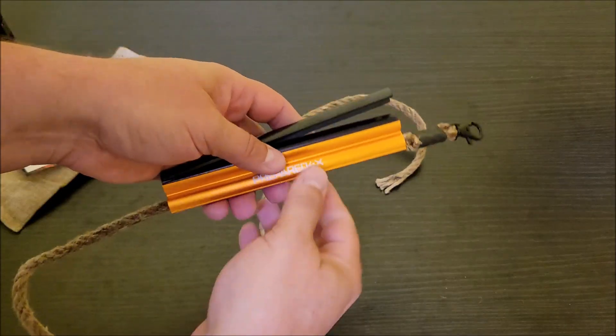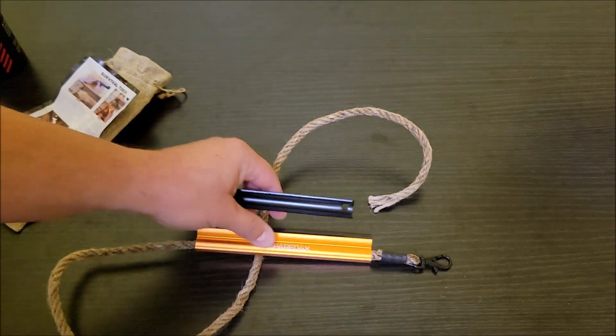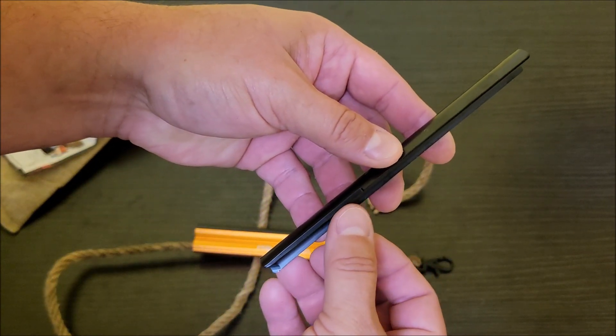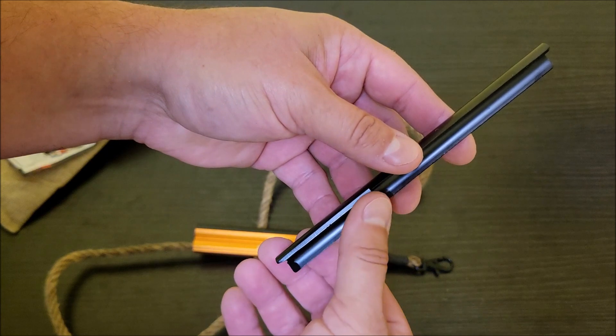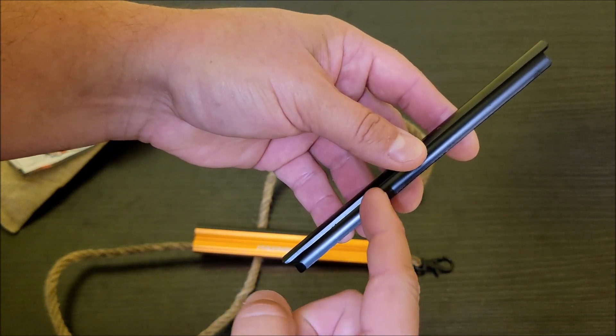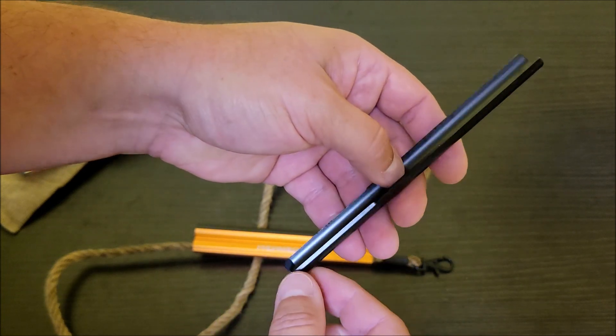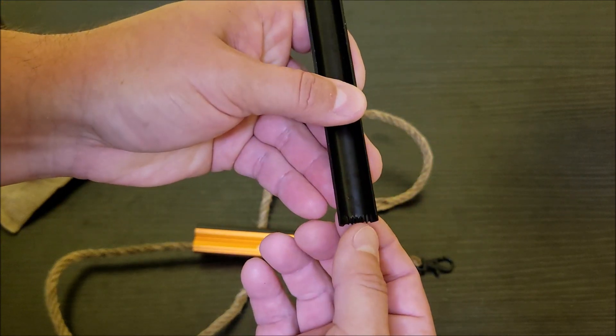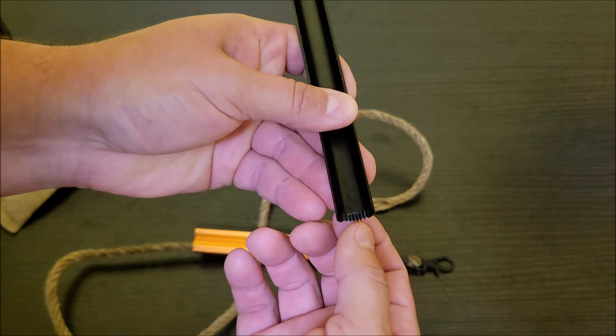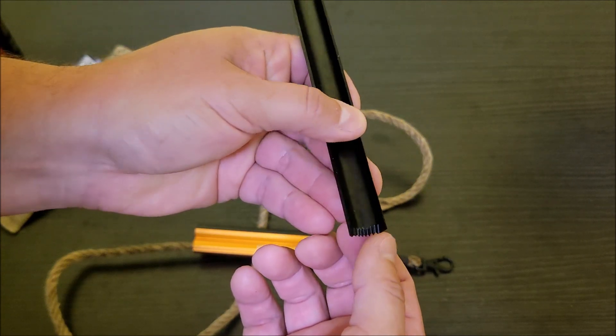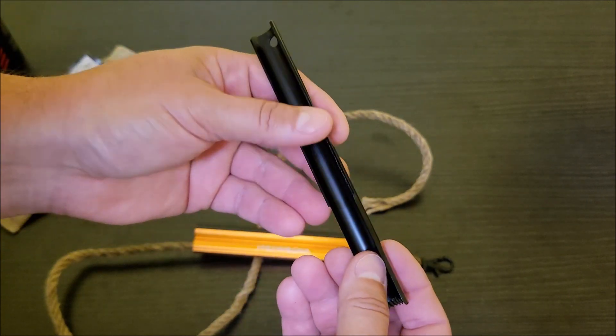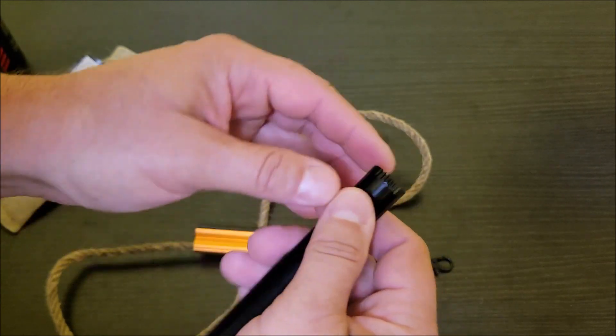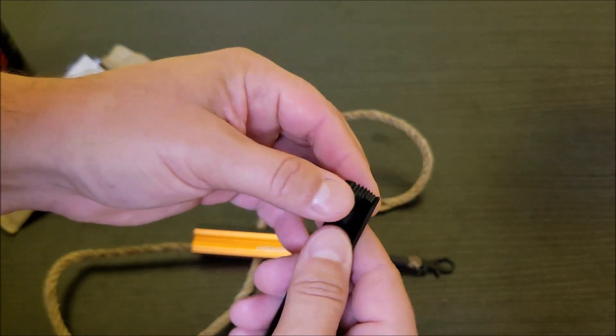A couple more things that I wanted to show you on this. This striker here has kind of a sharp edge here. It's not like super knife sharp but it's got a sharpened edge here and it's got a sharpened edge here, and then down here it's got kind of like a serrated edge here going along here. You can use these for different things.